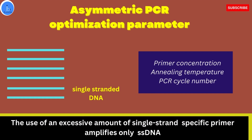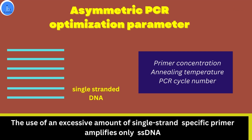Similarly, in asymmetrical PCR, standardization will also be required. The standardization parameters you can work on are the annealing temperature, the concentration of the primer, the concentration of the template, and the number of PCR cycles.